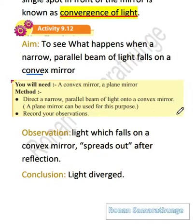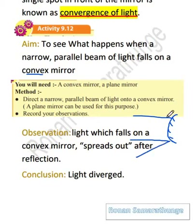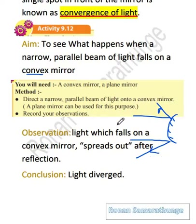Like we did in the previous practical, you are going to take a convex mirror — you can even do it with anything else but a convex mirror is much better. Then you direct some narrow beams of light towards it, and you will observe that light rays get diverged. They spread out; they are not gathering in one place. This is what happens with a convex mirror — light gets diverged.